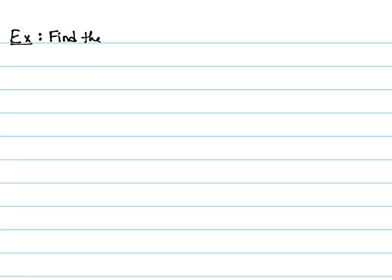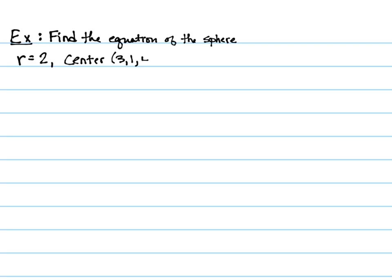We're going to find the equation of a sphere. The first one is set up quite directly: r equals 2 and center is 3, 1, 4. Our formula gives x minus 3 squared plus y minus 1 squared plus z minus 4 squared equals 4. When it's given in this form, there's little to no work to do — you're just substituting values into the respective locations.